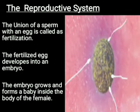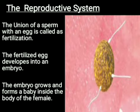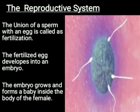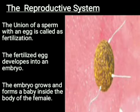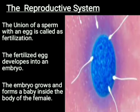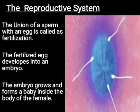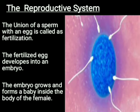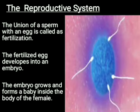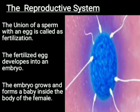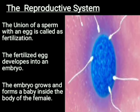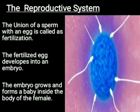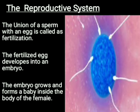The union of sperm with egg or ovule is called fertilization. When the male gamete meets and unites with the female egg or ovule, this process is called fertilization. The fertilized egg develops into an embryo, and the embryo grows and forms a baby. This growth, development, and fertilization take place inside the body of the female.